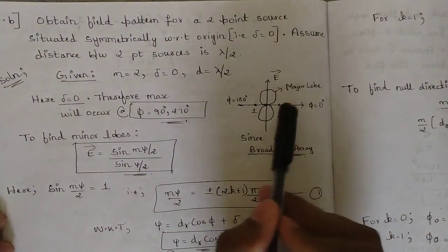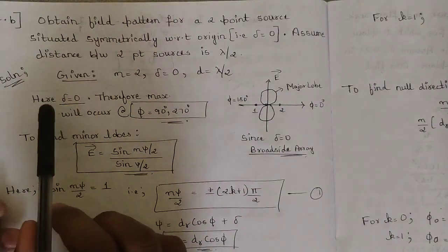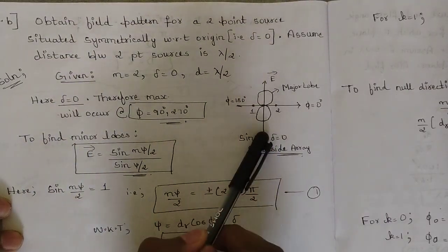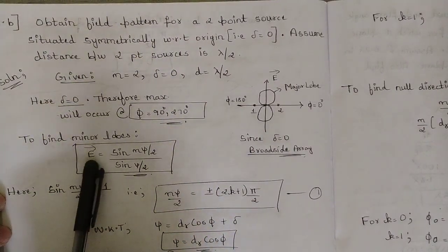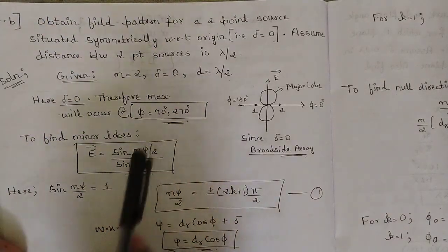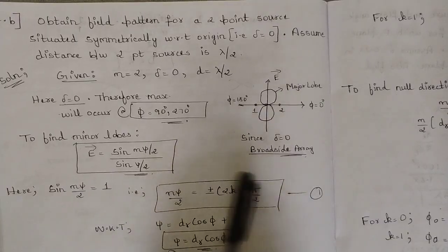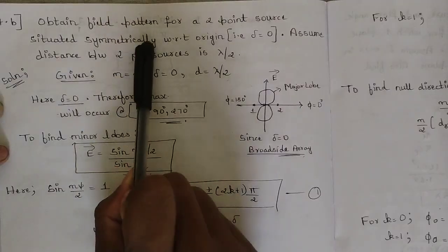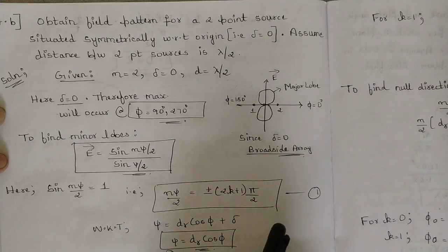In the broadside array, the major lobe is generated horizontally, and minor lobes are formed with respect to the null values. For δ = 0, the maximum value occurs at φ = 90° and φ = 270°. To find the minor lobes, we use the condition: E = sin(nψ/2) / sin(ψ/2), where the phase value equals one, so nψ/2 = ±(2k+1)π/2. This applies because it is a broadside array situated symmetrically with respect to the origin.